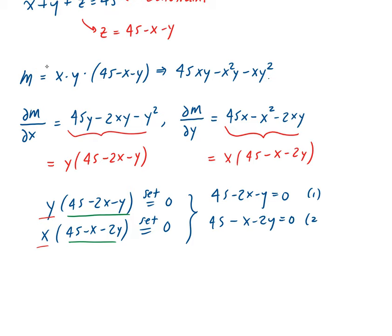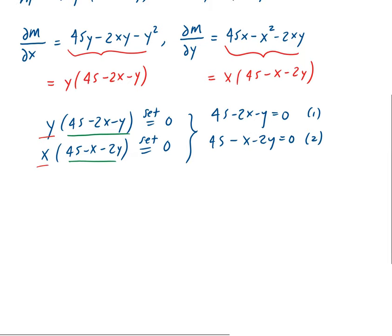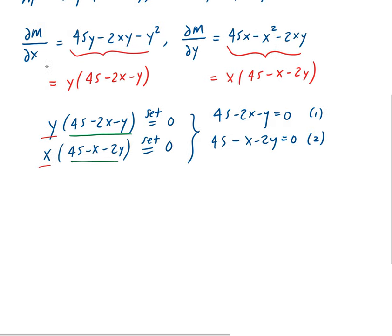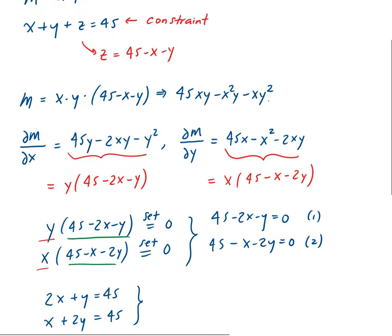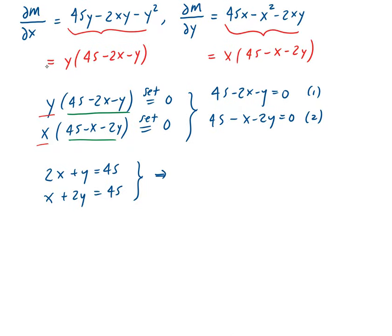Calling these equation 1 and equation 2, we rewrite them as: equation 1 is 2x plus y equals 45, and equation 2 is x plus 2y equals 45. Solving this system — using elimination, substitution, or matrices — we get x equals 15 and y equals 15.